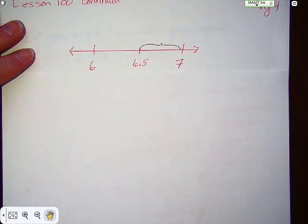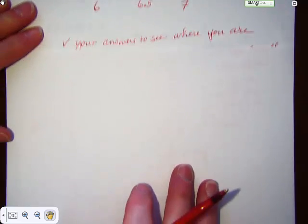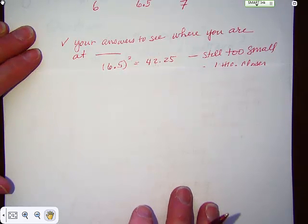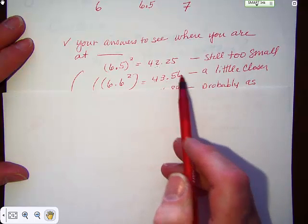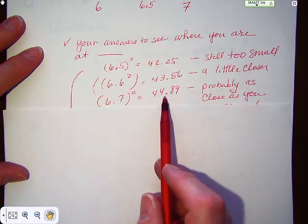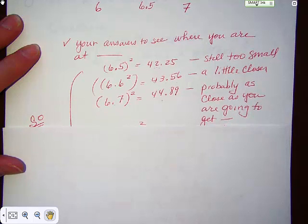Sometimes I get a little caught up in these kinds of things and have some fun with them. We have 6.5 — if we square that, we get 42.25, which is not 45; it's too small. So if we take 6.6 and square it, we get 43.56 — that's closer to 45. If we go to 6.7 and square it, we get 44.89, which is probably as close as we're going to get. So if you were just going to estimate, you would say it's approximately 6.7.